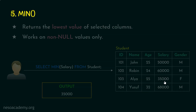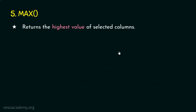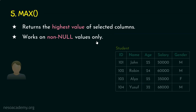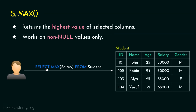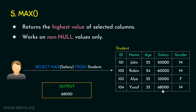Coming to the last aggregate function, MAX — this is going to return the highest value in the selected column, which means the maximum value. Like MIN, this also works on non-null values only. Assume the user gives the query: SELECT MAX(salary) FROM student. The user intends to get the maximum value in the salary column. From the student table, the maximum value in the salary column is 68,000.